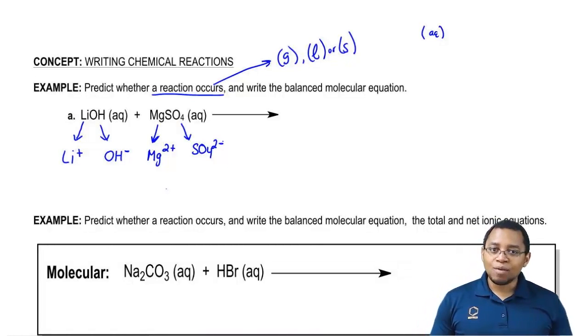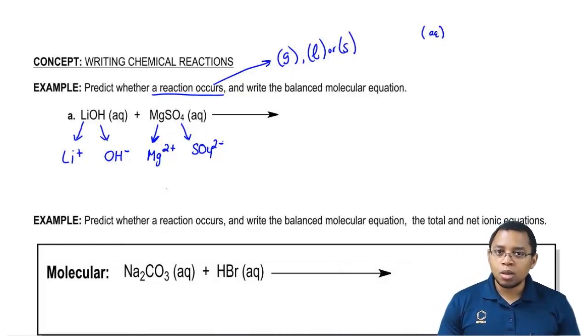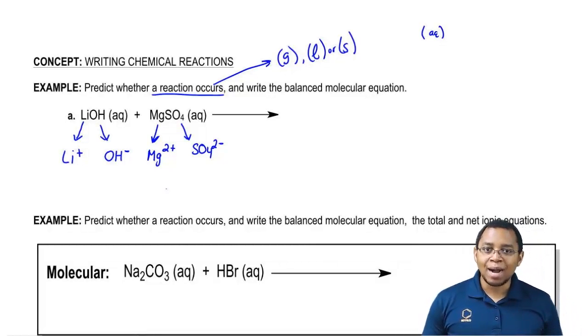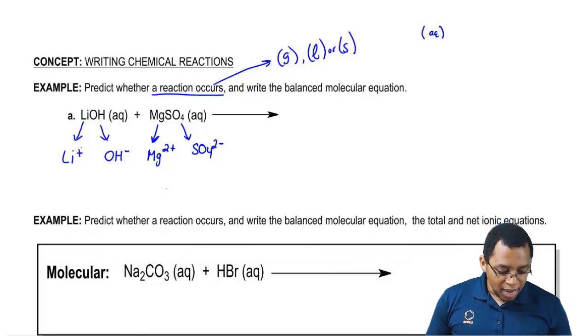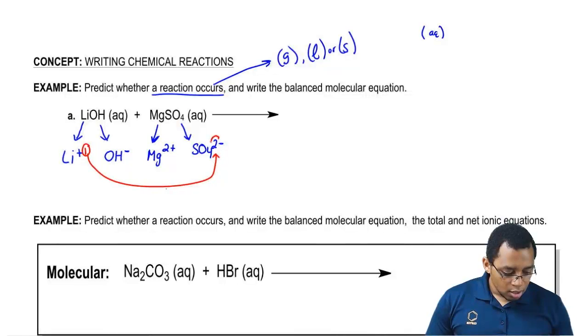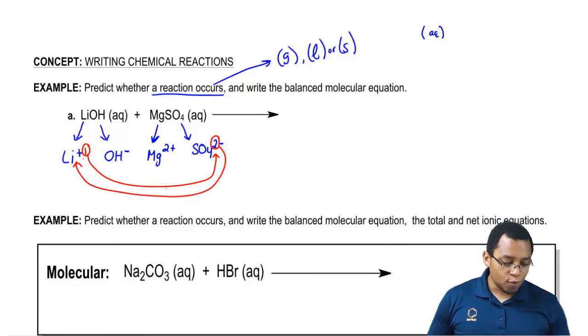Now that we've broken up everyone into their ions, it's time for us to switch partners. So these guys are going to act like swingers and switch partners with each other. Remember in chemistry opposites attract. This positive is going to be attracted to this new negative sulfate. The 1 from the lithium is going to come over here. The 2 is going to come over here. So that's going to create our first product.